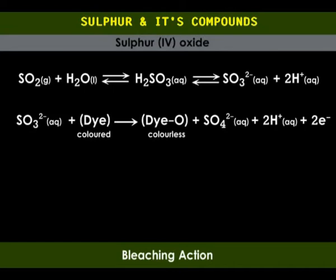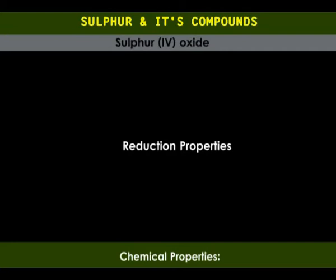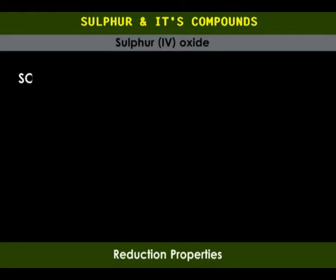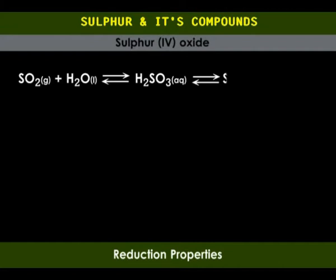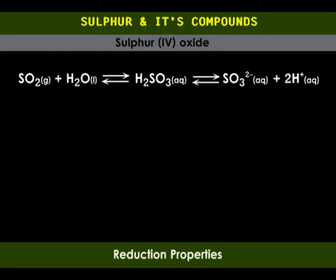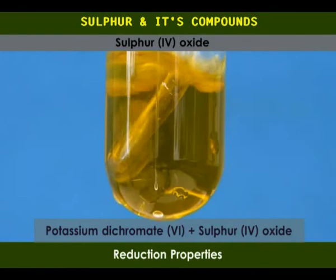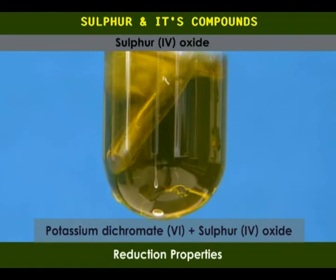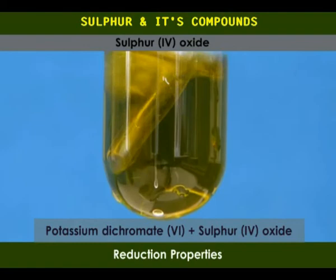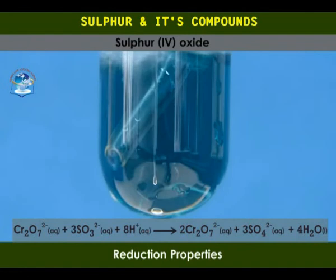Reducing action of sulfur dioxide. Sulfur dioxide only displays reducing properties when dissolved in water, existing as sulfurous acid which dissociates into sulfite and hydrogen ions. The sulfite ion can be oxidized to sulfate ion, releasing two electrons which can be accepted by an oxidizing agent. When sulfur dioxide gas is bubbled into acidified potassium dichromate(VI) solution, the colour changes from orange to green, because the dichromate(VI) ions are reduced to chromium(III) ions. The electrons for this reduction are supplied by the sulfite ions, which are oxidized to sulfate ions.